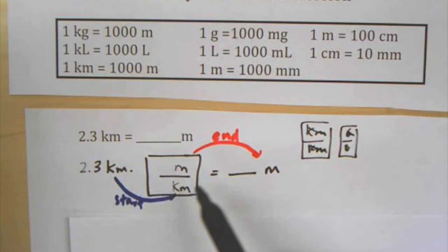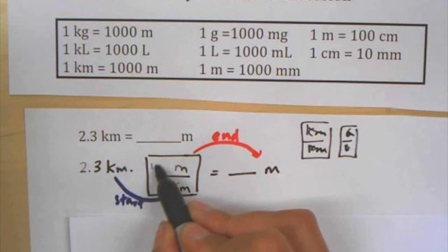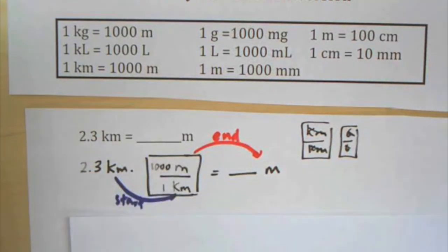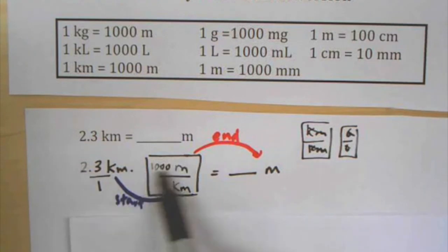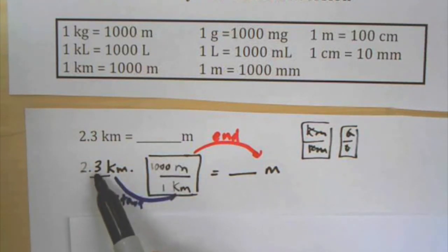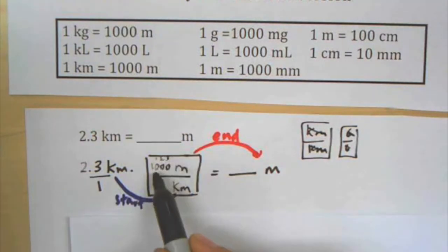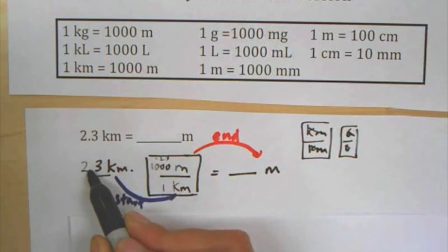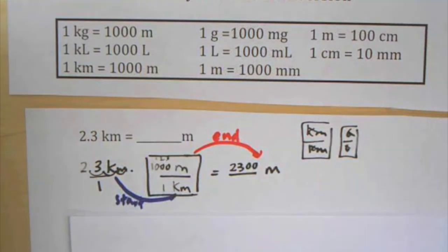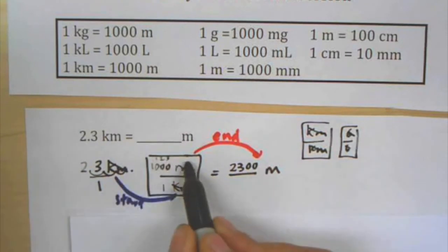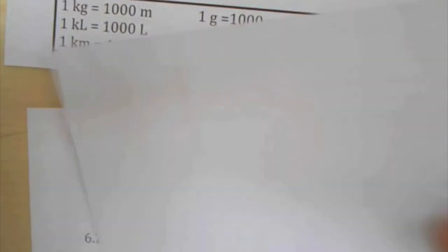I need to figure out the relationship between meters and kilometers. Looking at the reference: 1 kilometer is 1,000 meters, so 1,000 goes with the meters and 1 goes with kilometers. Multiplying out: 2.3 times 1,000. You can estimate — 2 times 1,000 is about 2,000 — or move the decimal three places, giving you 2,300. The kilometers cancel out and I'm left with 2,300 meters.